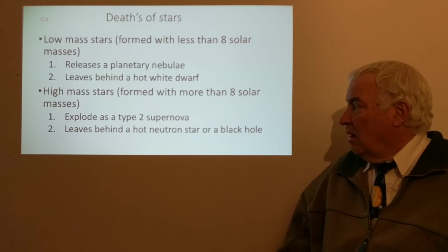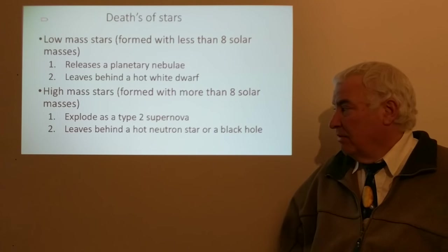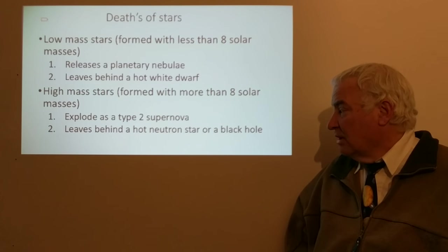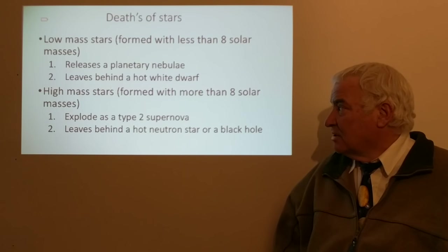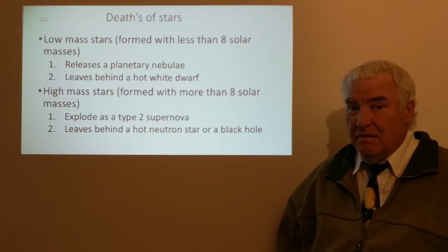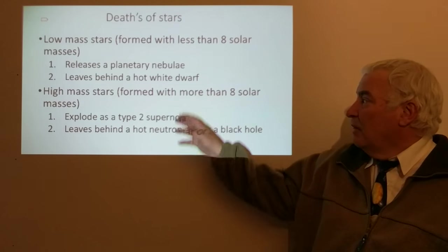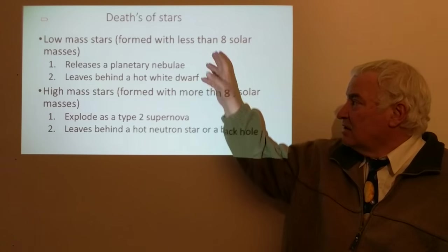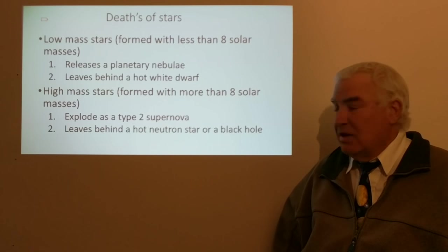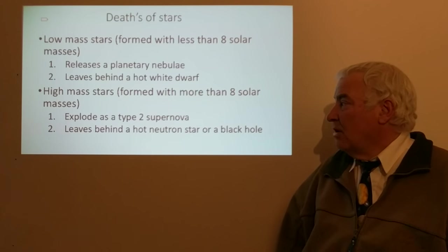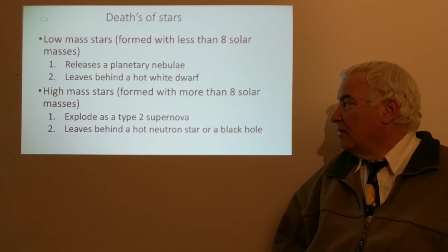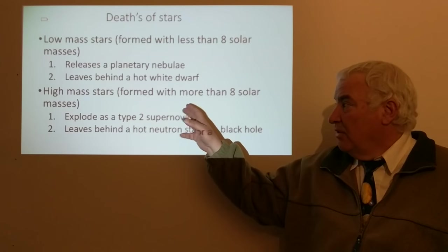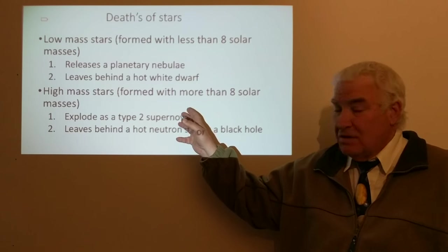These explode as type 2 supernovae and leave behind a neutron star or a black hole. Lower-mass stars like the Sun, with less than eight solar masses, release a planetary nebula and leave behind a white dwarf. These constitute about 97 or 98 percent of all stars. Two or three percent of stars fall in the group of high-mass stars, and that's what I'm going to talk about now.